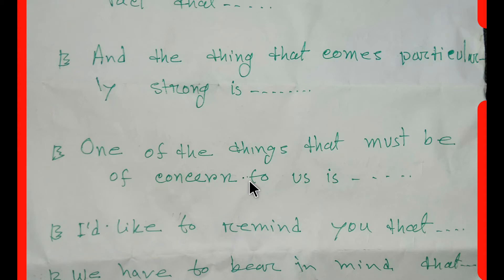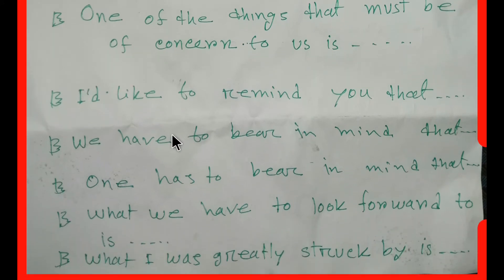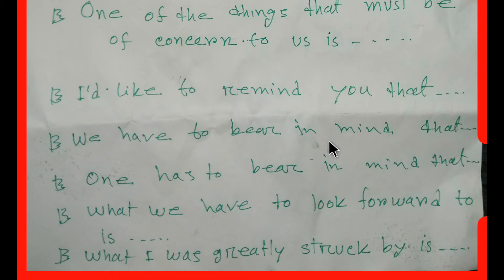'One of the things that must be of concern to us is...' Here you have to use a clause. For example: 'One of the things that must be of concern to us is that he's not an honest man.' Also: 'I'd like to remind you that he's not an honest man.' And: 'We have to bear in mind that he's not an honest man.'